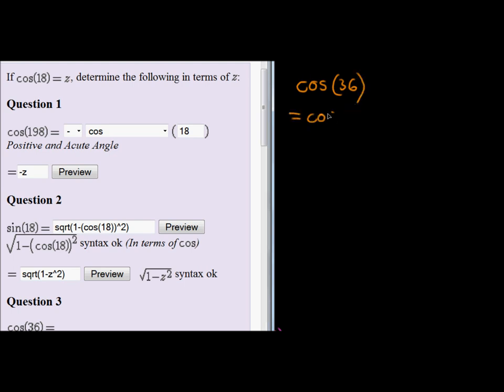So, we need to write 36 in terms of 18. So we can say that's the same as saying cos of 2 times 18. Well, cos 2 times 18, we know that's a double angle.